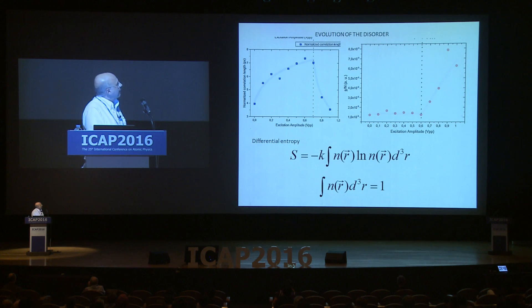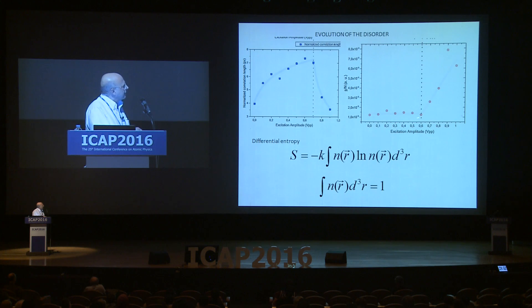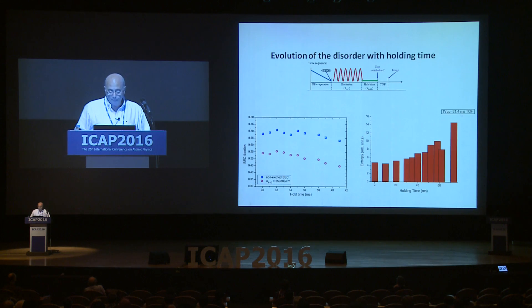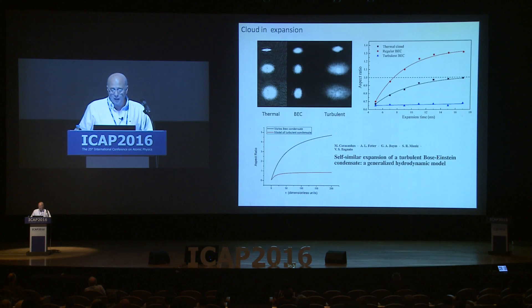In terms of the evolution of disorder, you can evaluate the differential entropy. Basically when the normalized correlation length goes down, disorder starts to grow. As I keep putting energy in, the disorder starts to build up — and I think this is the moment where turbulence starts to develop. Very interestingly, if I excite and then stop, the disorder still evolves a little further, meaning the energy is being rearranged internally and building up more disorder.